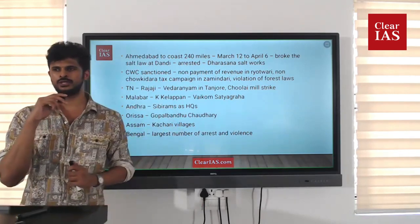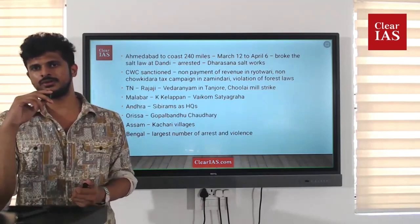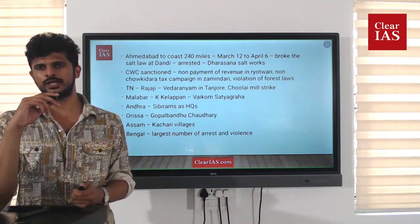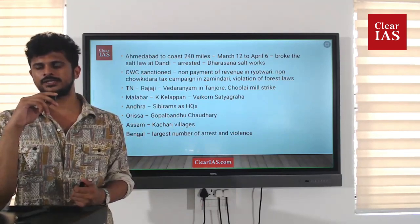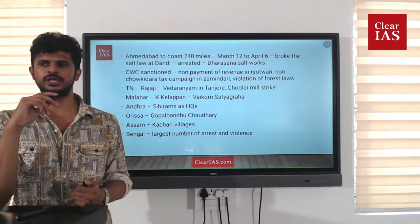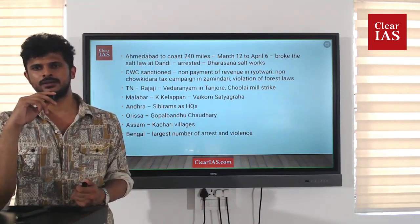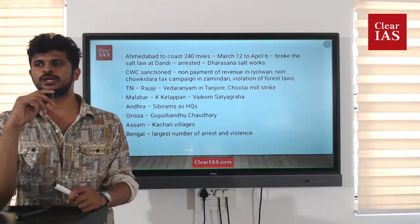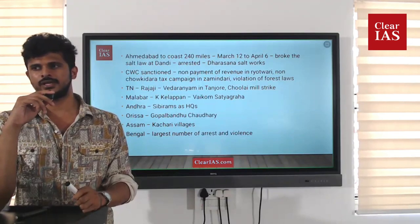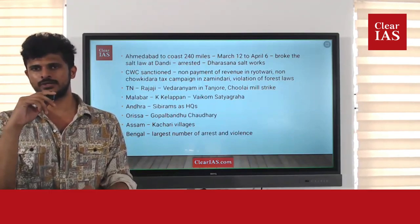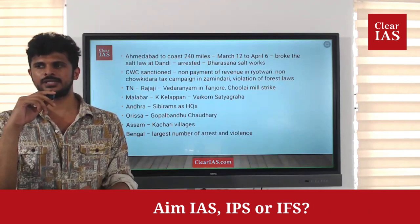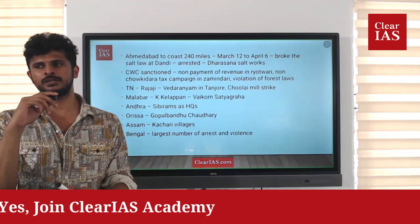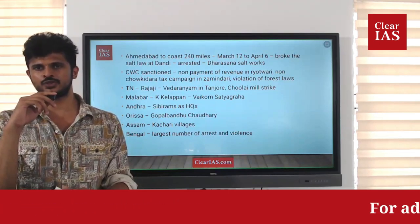One plan was the non-payment of revenue in Ryotwari areas, where peasants who cultivated the land directly refused to pay revenue, disobeying the tax laws. In Zamindari areas, where zamindars paid the revenue, there was a no-Chaukidara tax campaign. In these areas, both zamindars refused to pay the British and peasants refused to pay the zamindars.